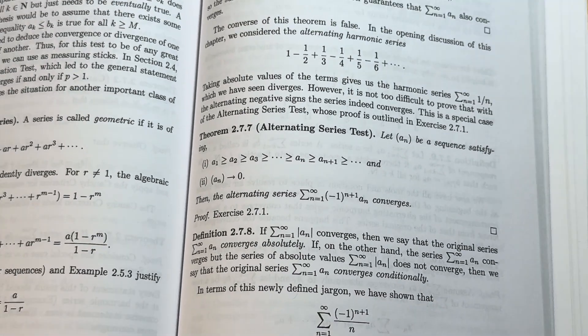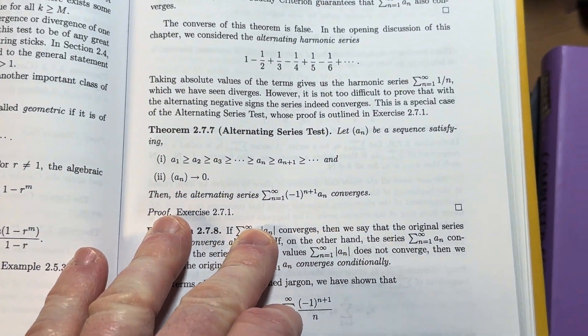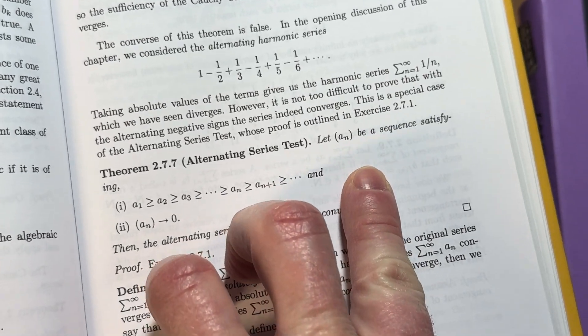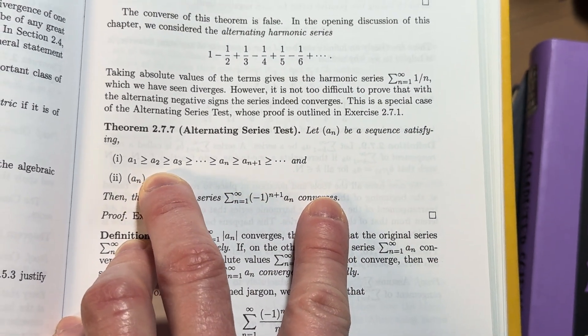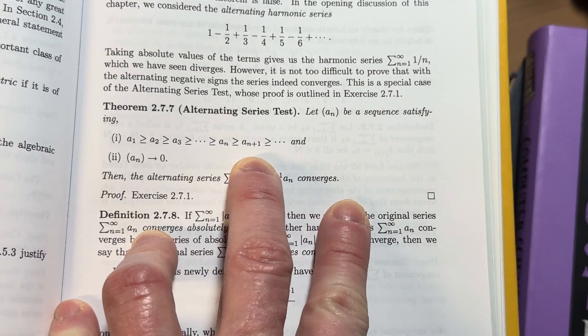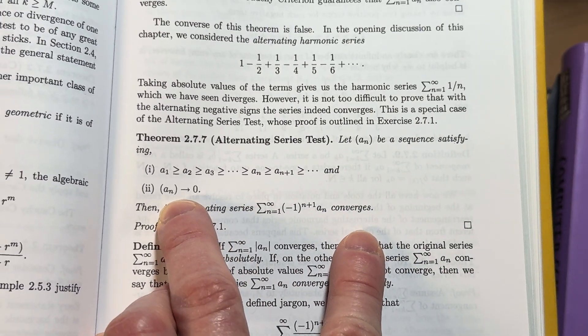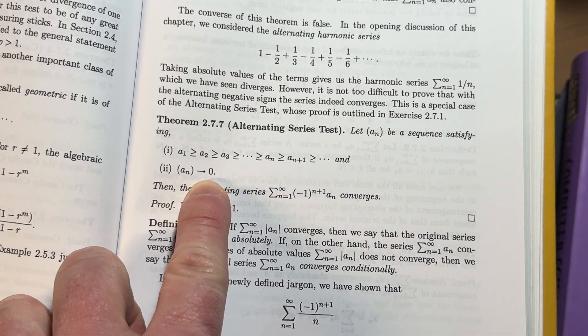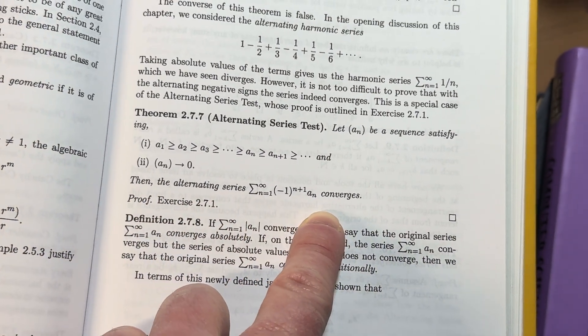So there's a lot of stuff in here that you might have seen. Alternating series test is also from Calculus 2. Let a sub n be a sequence satisfying a sub 1 greater than or equal to a sub 2, greater than or equal to a sub 3, etc. And the limit, as n approaches infinity, of the sequence a sub n is equal to 0. Then the alternating series converges.